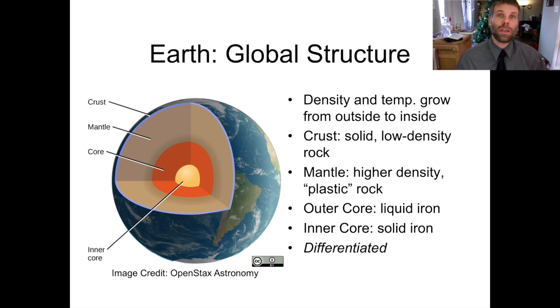Beneath that is the mantle, which instead of being solid like the crust is much more plastic. The best analogy that I've been able to come up with is to think of the consistency of jello, where jello, if you poke it, it'll move and it can flow around under pressure. But if you just let it go and leave it alone, it will hold its shape.